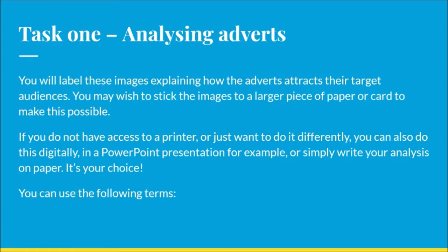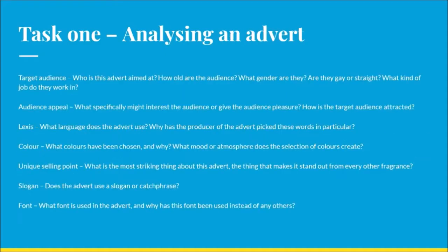When you're analysing these adverts, these are the kinds of things we want you to talk about. Target audience: who is this advert aimed at? How old are the audience? What gender are they? Are they gay or straight? That's something which is really important for advertisers to consider. What kind of job do they work in, which can also allow advertisers to work out how expensive to make the brand. Audience appeal: what specifically might interest the audience or give them pleasure? How is the target audience attracted? For example, if the perfume is aimed at a woman, how do you know it's appealing to a predominantly female audience rather than a stereotypical masculine one?